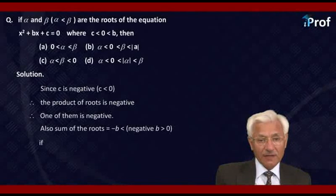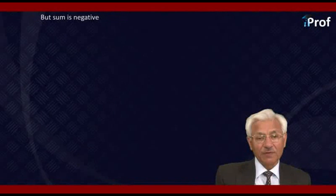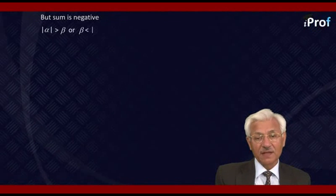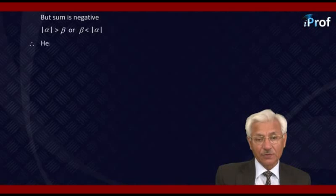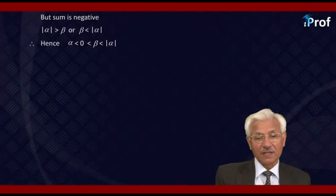Also, since α < β and α < 0, therefore β > 0. But the sum is negative, which means |α| > β, so β < |α|. Hence α < 0 < β < |α|, which means option B is correct.